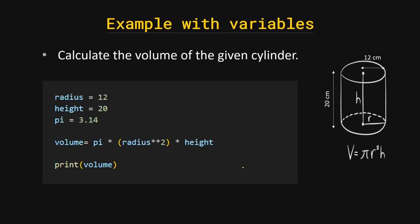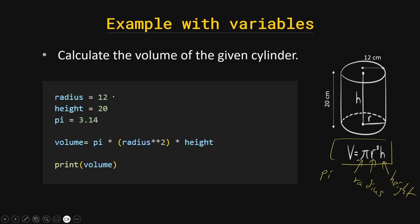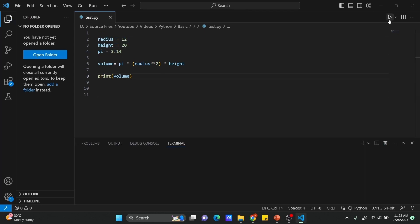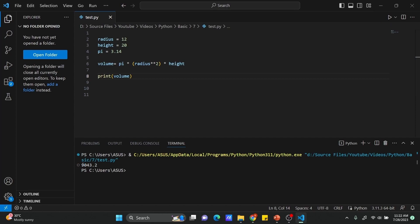Now let's do a real-world example: writing a program to find the volume of a cylinder. We use the formula with the constant pi, the radius, and the height. You can define variables — for example, radius = 12, height, and pi — then create a volume variable using the cylinder formula, and print the volume. Let's jump into VS Code and run this code — you can see the volume of the cylinder is displayed.